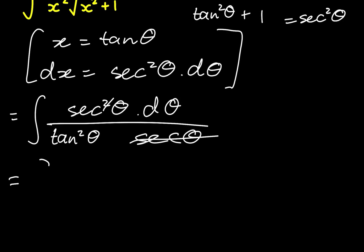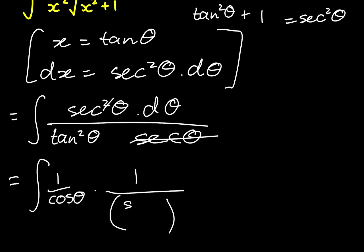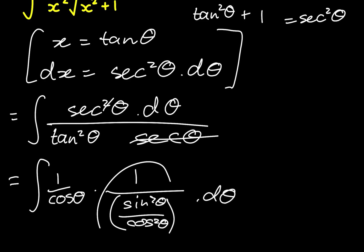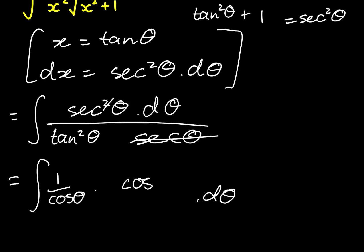Rewriting this in terms of sines and cosines: secant in terms of cosine is 1 over cosine of theta, and tangent squared of theta is sine squared of theta over cosine squared of theta, d theta. Since we have 1 over that fraction, we invert it, giving cosine squared of theta over sine squared of theta. Now we have two cosines so they cancel, removing the squared exponent.